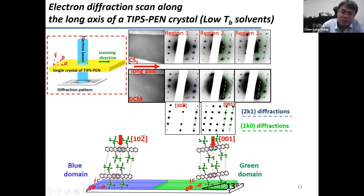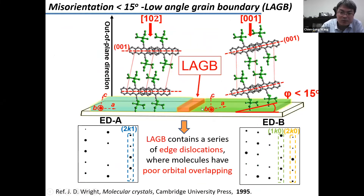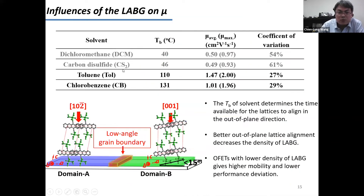This result tells us that when using low-boiling-point solvents to grow crystals, along the charge transport channel you can have two crystalline domains that are misoriented relative to each other. This is a tiny grain boundary that cannot be observed even under TEM. Reading Professor Wright's book, we found that if two neighboring crystalline domains are misoriented by less than 5 degrees, you can identify it as a low-angle grain boundary. So the crystal array grown from low-boiling-point solvent gives lower mobility because these tiny low-angle grain boundaries slow down charge transport.